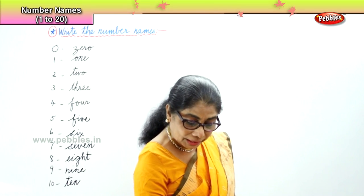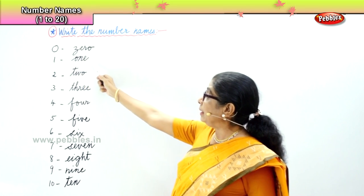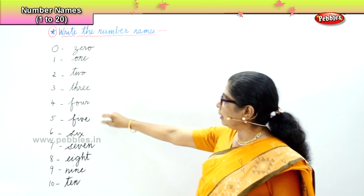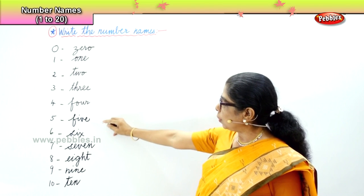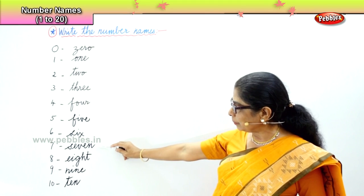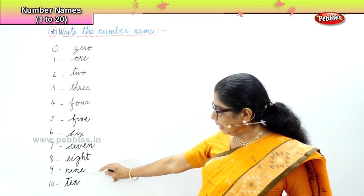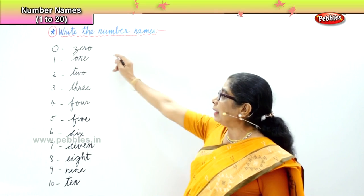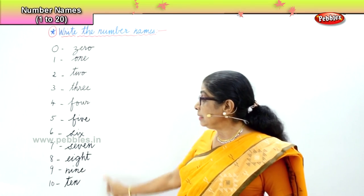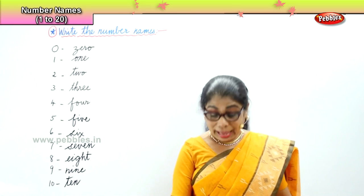Now, just look very carefully and say it with me. O-N-E, 1. T-W-O, 2. T-H-R-E-E, 3. F-O-U-R, 4. F-I-V-E, 5. S-I-X, 6. S-E-V-E-N, 7. E-I-G-H-T, 8. N-I-N-E, 9. T-E-N, 10. And what is this? Zero — Z-E-R-O. Each of these numbers and their names you must write carefully several times and learn.